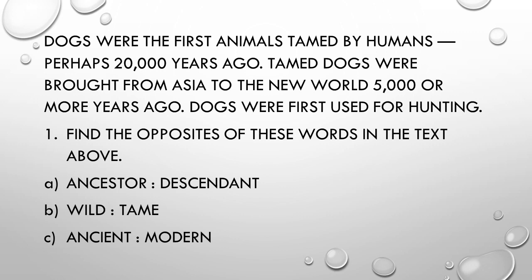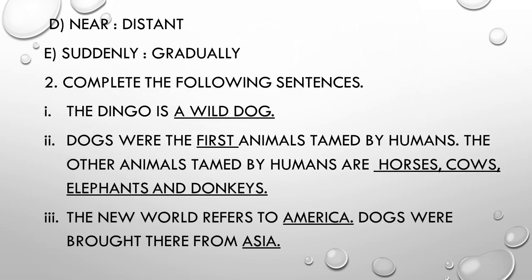Now answer the questions. Find the opposites of these words in the text above: ancestor — descendant; wild — tame; ancient — modern; near — distant; suddenly — gradually. Question 2: Complete the following sentences. The dingo is a wild dog. Dogs were the first animals tamed by humans. The other animals tamed by humans are horses, cows, elephants and donkeys. The New World refers to America; dogs were brought there from Asia.